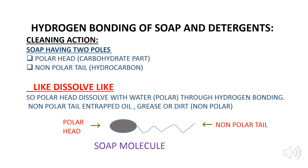We do washing on a daily basis, but did you know that hydrogen bonding is involved in our cleaning action? Soap and detergents also involve hydrogen bonding. A soap molecule has two poles: a polar head and a non-polar tail. According to the principle 'like dissolves like,' the polar head dissolves water, which is polar in nature, through hydrogen bonding, whereas the non-polar tail entraps oil, grease, or dirt because these are non-polar in nature. As a result, the cleaning of clothes takes place.